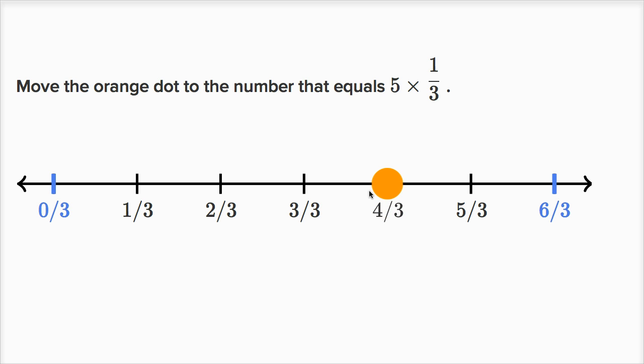Four times, you get to four-thirds. Five times, you get to five-thirds. Five times one-third is gonna be five-thirds. Or you could say five one-thirds, which is the same thing as five-thirds.